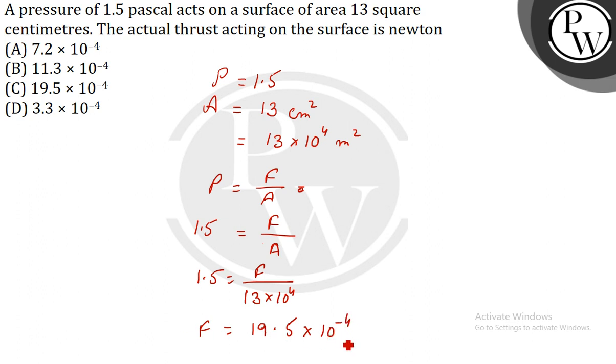This is the force or we can say the thrust, the actual thrust acting on the area. So, option number C is the correct answer which is 19.5 into 10 to the power minus 4.